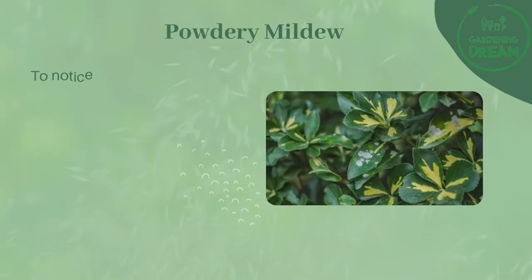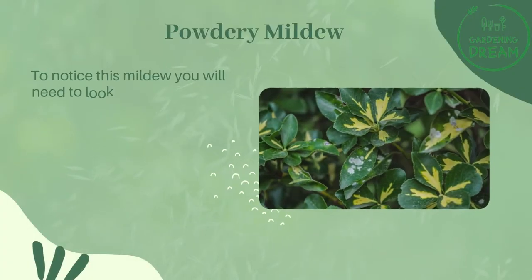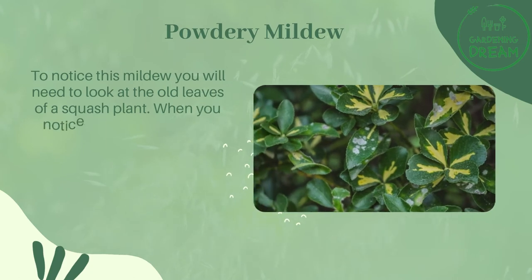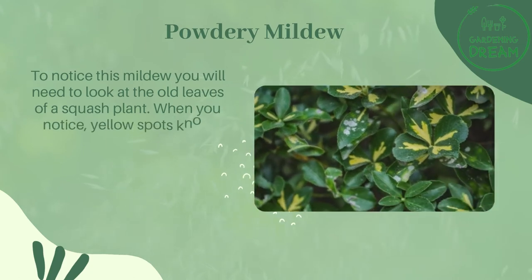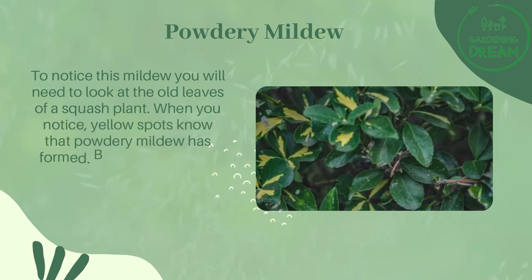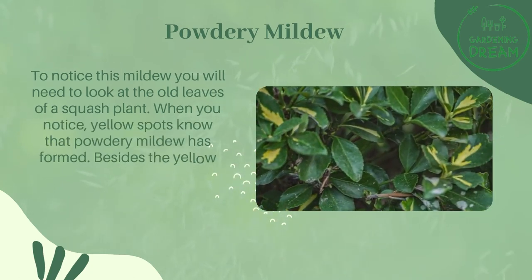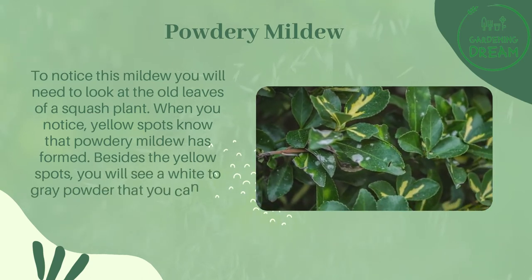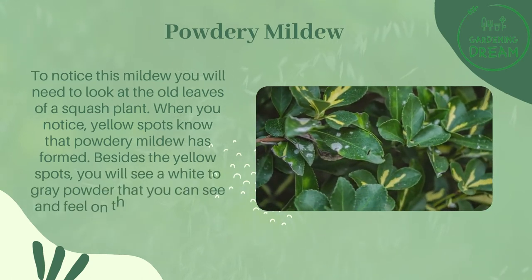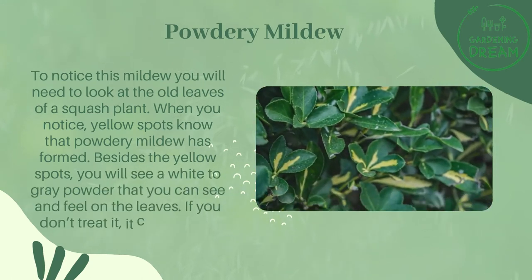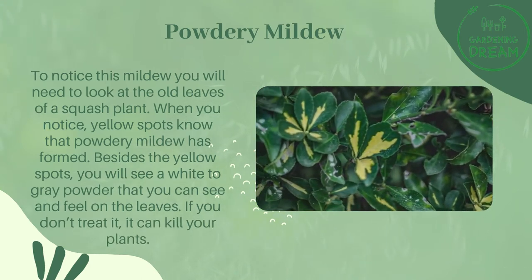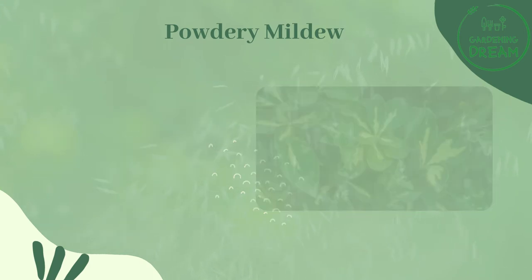Diseases and Pests — Powdery Mildew: To notice this mildew you will need to look at the old leaves of a squash plant. When you notice yellow spots, know that powdery mildew has formed. Besides the yellow spots, you will see a white to gray powder that you can see and feel on the leaves. If you don't treat it, it can kill your plants.